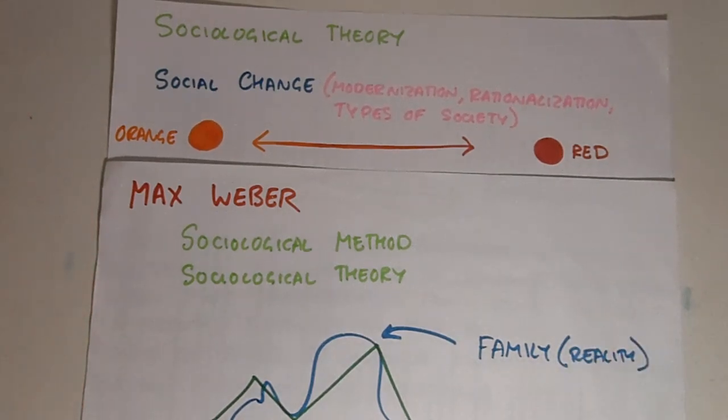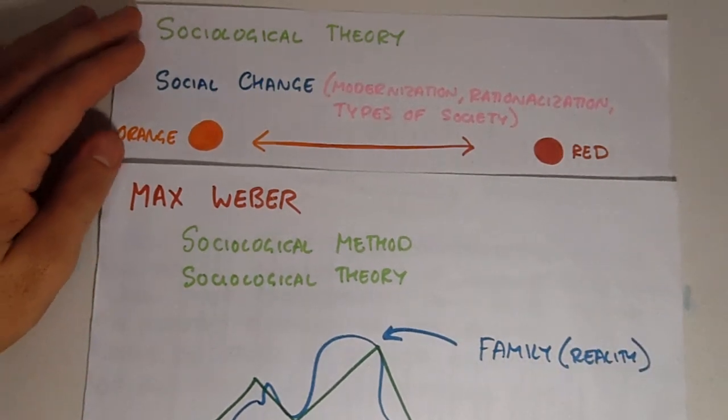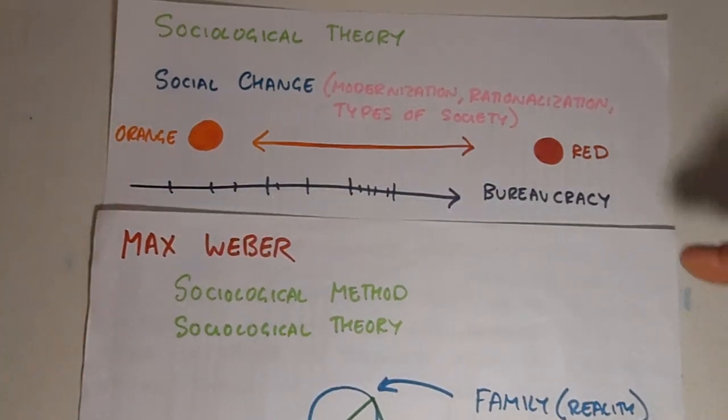Now this is just an example with silly colors, but it explains how Weber looked at bureaucracy and how he used ideal type, the concept of the ideal type, to understand bureaucracy and, more importantly, to understand social change.